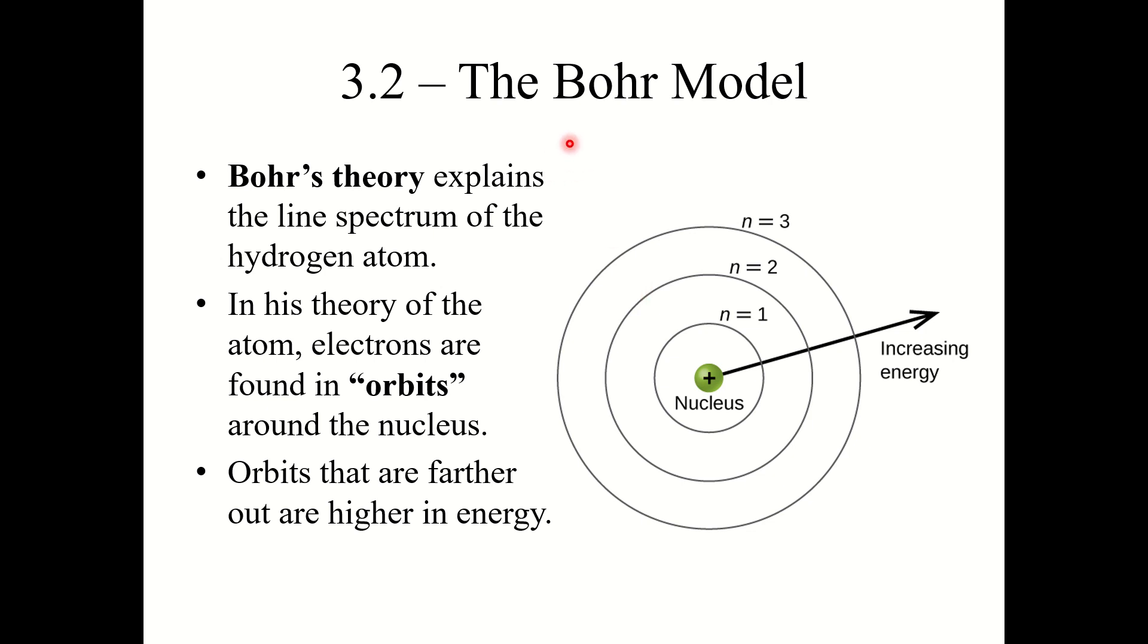Section 3.2, the Bohr Model. Niels Bohr's theory explains the line spectrum of the hydrogen atom and the other atoms we were looking at at the end of section 3.1.